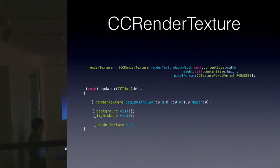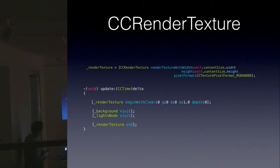Cocos 2D makes a lot of the OpenGL boilerplate code really easy. This is all you need to set up a render texture for the entire screen — that's the first line. In the update method for the entire scene, all we do is clear the render texture and draw the background and all the lights to it. Once that's done, we can use this texture as a background for our heat effects.